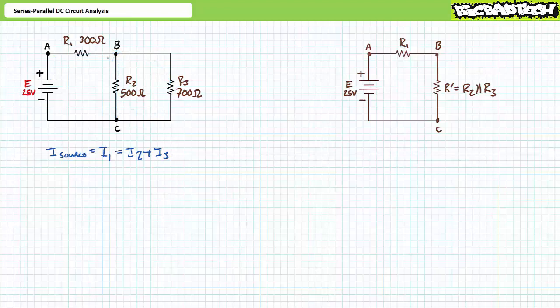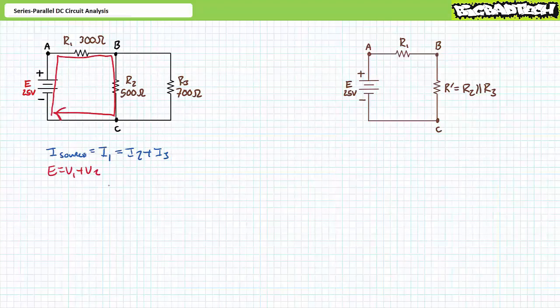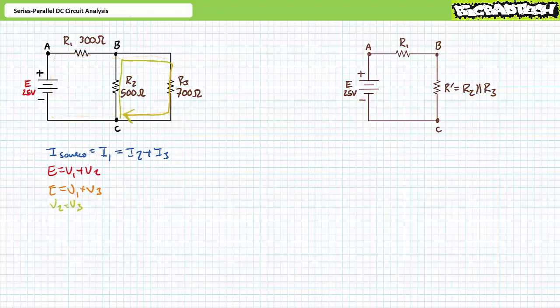Let's now look at voltage distribution within this circuit using Kirchhoff's voltage law. For this loop in red, the rise E is equal to the sum of voltage drops, where E equals V1 plus V2. Similarly, for this loop in orange, E equals V1 plus V3. Finally, for this loop in yellow, the rise V2 is equal to the drop V3. This analysis again confirms that R2 is in parallel with R3 — a simplification I'm calling R single prime — where R single prime is in series with R1.